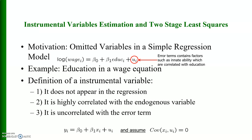The definition of an instrumental variable: it does not appear in the regression, it is highly correlated with the endogenous variable, but it is uncorrelated with the error term. In the regression model y_i = β₀ + β₁x_i + u_i, we assume that the covariance of x_i and u_i is not equal to zero.